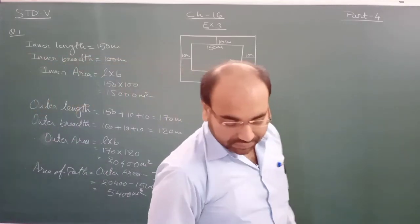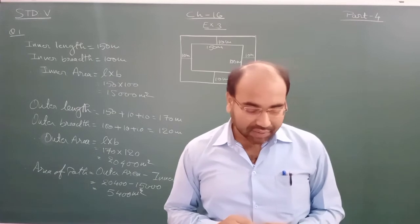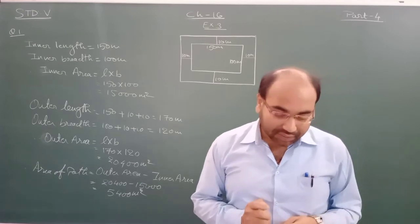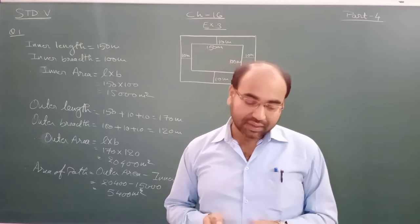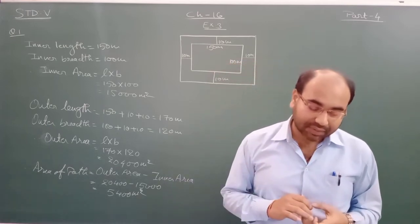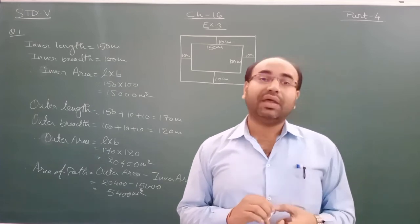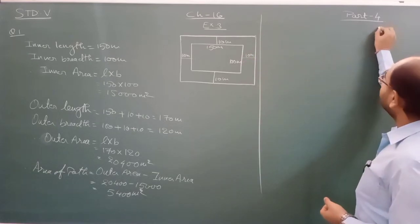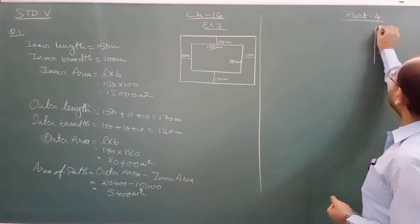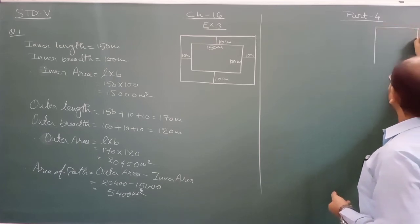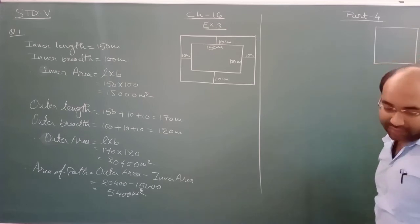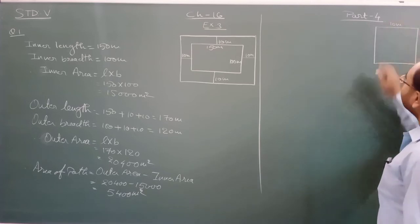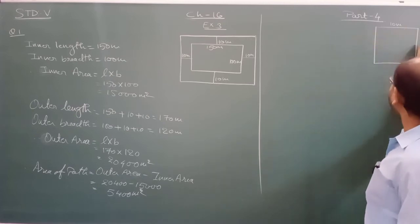Now the second question: find the area of path inside a square field. The square field has a side of 10 meter, and a path of breadth 1 meter is made inside it. Also find the cost of leveling the path at a rate of rupees 2.50 per square meter. So here the field is in the form of a square — one square is there with side 10 meter on each side.